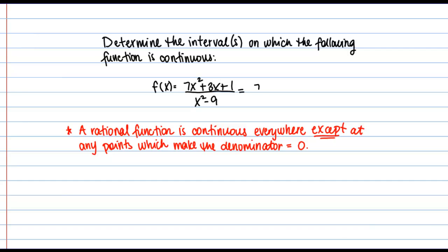In my denominator here, I have what's called a difference of squares, x squared minus 9. So that's going to factor into x plus 3 times x minus 3.